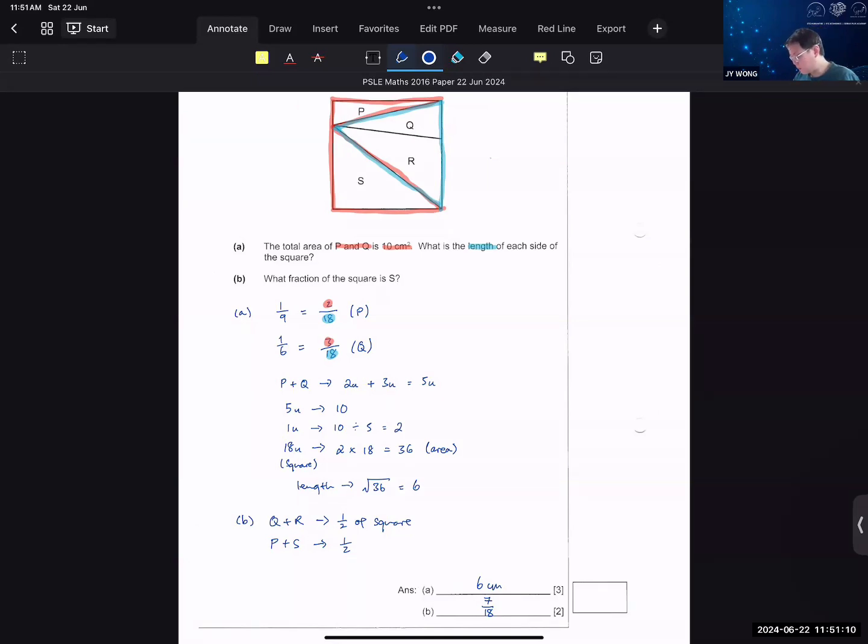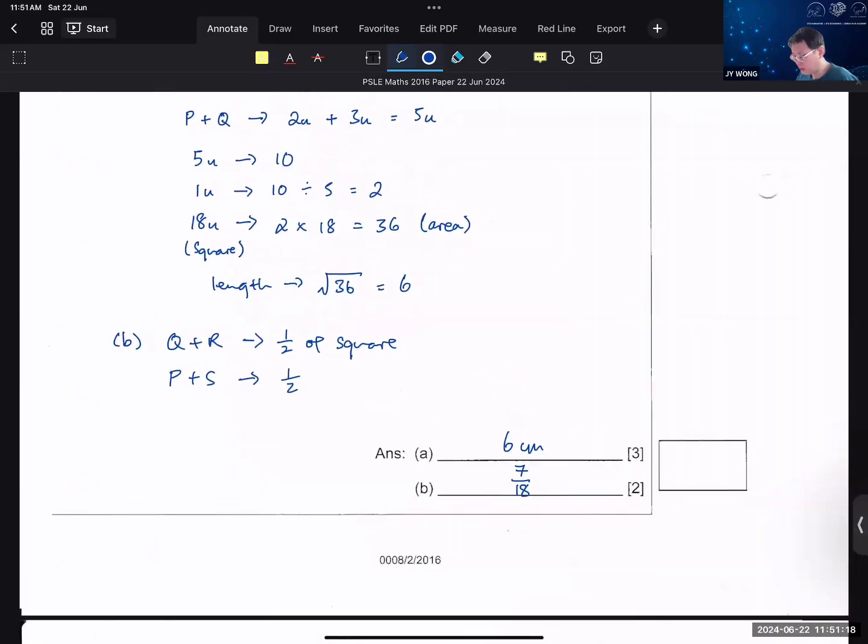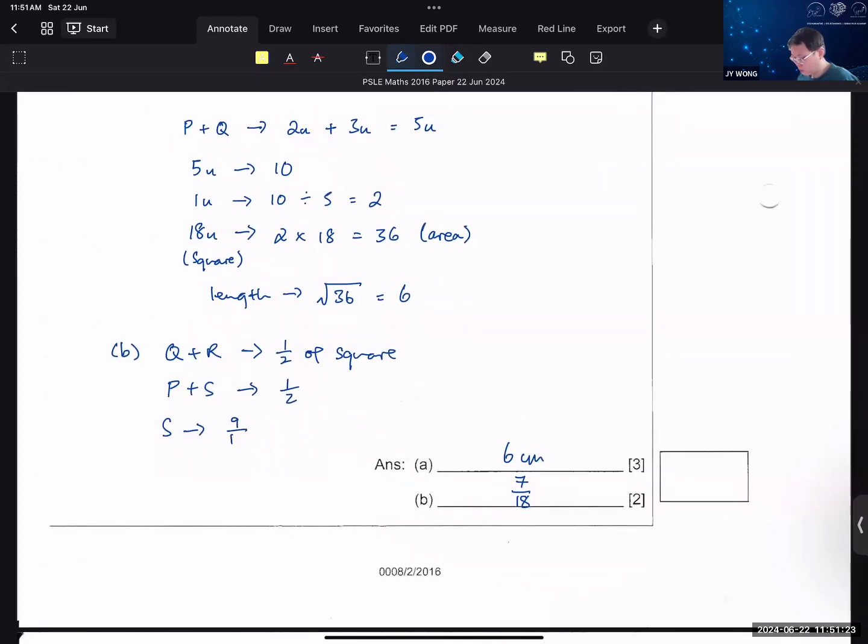And once you know that P plus S must be equal to half, you have P. P is 2 out of 18. Half is obviously 9 out of 18. And therefore, that allows you to find S. So S will be 9 out of 18 minus 2 out of 18 to give you 7 out of 18. And that's the answer already.